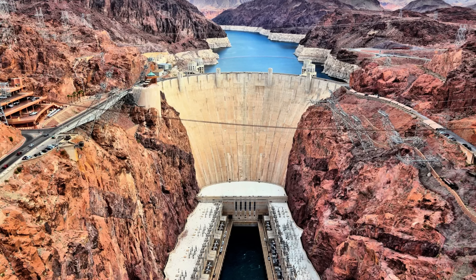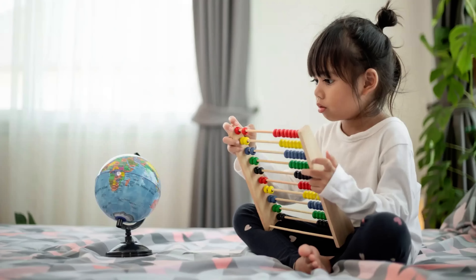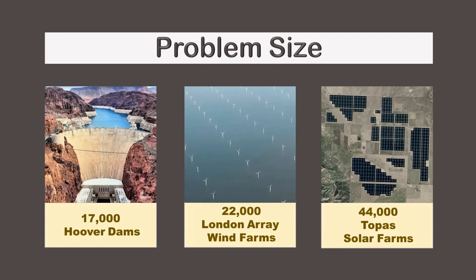To understand the challenge we face, it helps to look at the size of the problem. We already know how much energy the world consumes each year, and we also know how much energy a single large facility like Hoover Dam can produce annually. To get a sense of problem size, we can divide these two numbers to calculate how many Hoover Dam equivalents would be needed to replace global energy. The math works out to roughly 17,000 Hoover Dam equivalents — that's how much construction would be needed worldwide spread out over several decades.